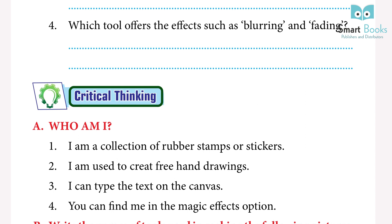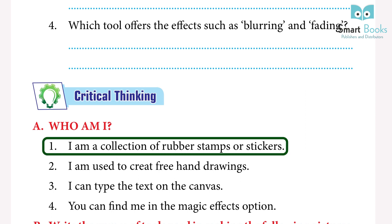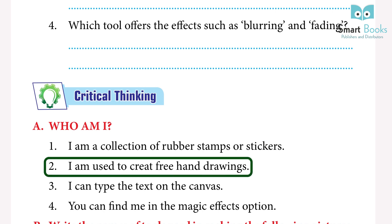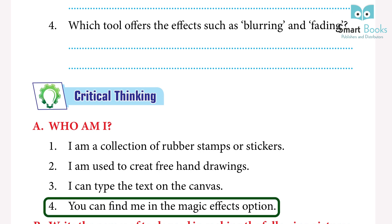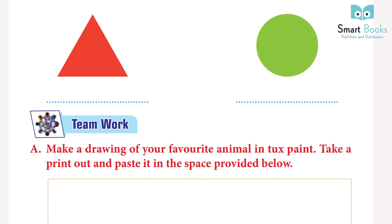Critical Thinking — Who am I? 1. I am a collection of rubber stamps or stickers. Answer: Stamp Tool. 2. I am used to create freehand drawings. Answer: Paint Tool. 3. I can type text on the canvas. Answer: Text Tool. 4. You can find me in the magic effects option. Answer: Fill Tool. Also: Name the tool used in making the following pictures — Magic Tool, Magic Tool, Shape Tool, Shape Tool.